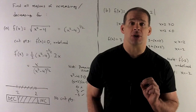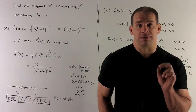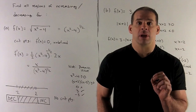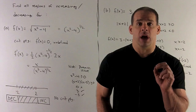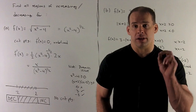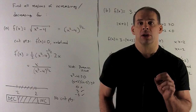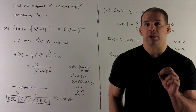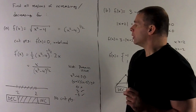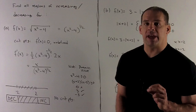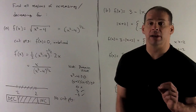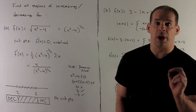Now we can start doing some work. First, we hunt for critical points by taking the derivative and finding where it equals 0 or is undefined. We use the chain rule: bring the one-half down, reduce the exponent, then multiply by the derivative of the inside, which is 2x.